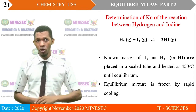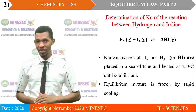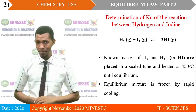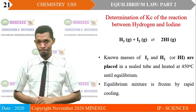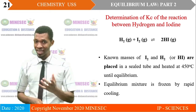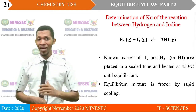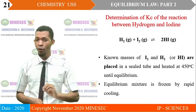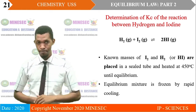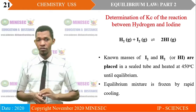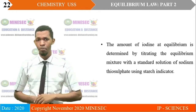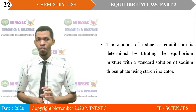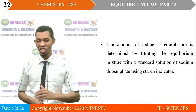Determination of the equilibrium constant Kc for the reaction between hydrogen and iodine. Hydrogen and iodine react in a closed system to establish an equilibrium with hydrogen iodide gas. Known masses of iodine and hydrogen are placed in a closed vessel and heated at 450°C until equilibrium is attained. The equilibrium mixture is frozen by rapid cooling. The amount of iodine at equilibrium is then determined by titrating with a standard solution of sodium thiosulfate, using starch as indicator.